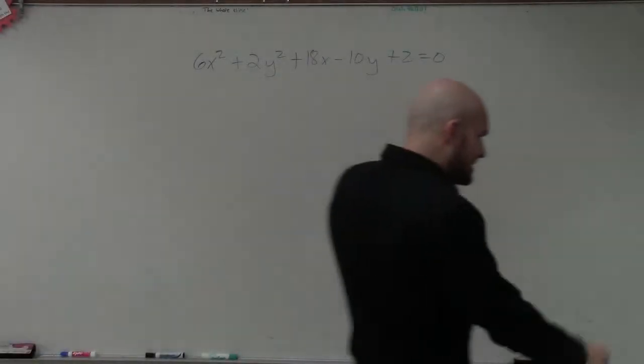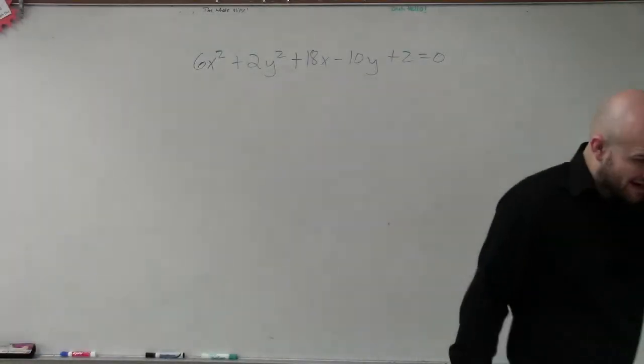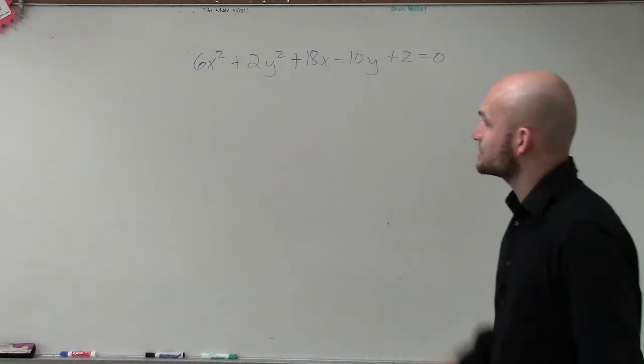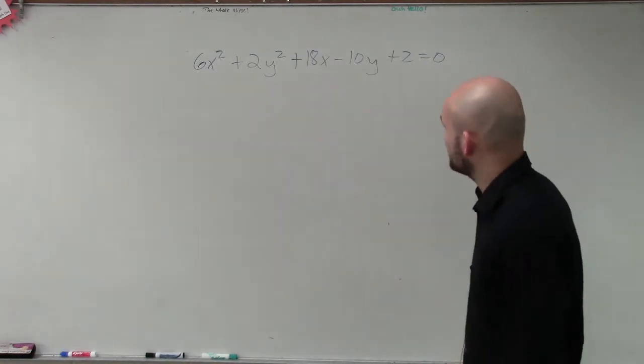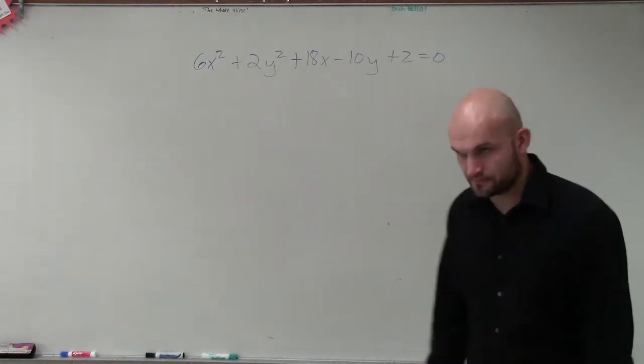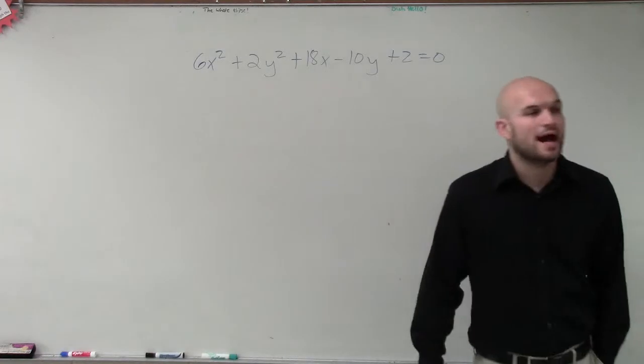So, ladies and gentlemen, right now what we have is a 4-year-old — 6x squared plus 2y squared plus 18x minus 10y plus 2 equals 0. Alright?